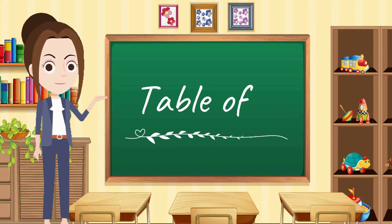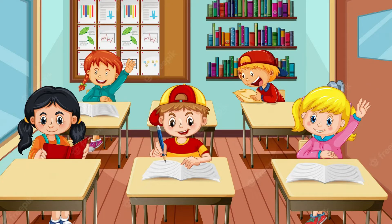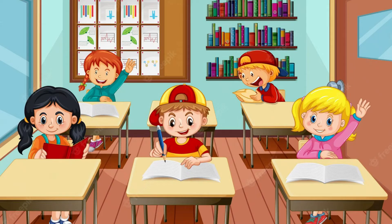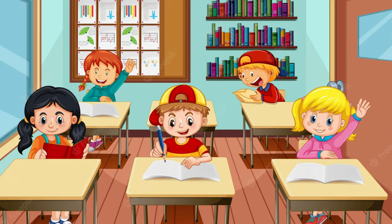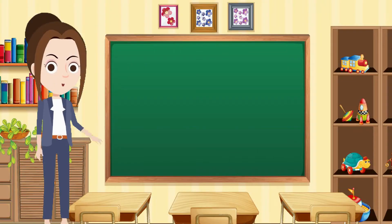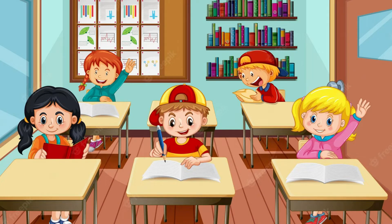Dear kids, let's start to learn the table of five. Five ones are five. Five twos are ten. Five threes are fifteen. Five fours are twenty. Five fives are twenty-five.